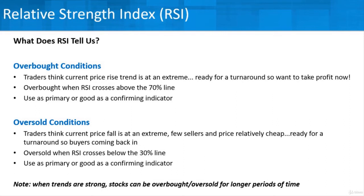Oversold conditions are the exact opposite. Traders think the current price has fallen to an extreme — it's gone way too far, there are few sellers, the price is relatively cheap, and people aren't willing to sell anymore. It might be ready for a turnaround going back up, with buyers starting to come back in, and as it starts to go back up, even more buyers will come in and drive the price up. A security would be oversold when the RSI crosses below the 30% line. So above 70% is overbought, below 30% is oversold — and again, you can use that as a primary or as a confirming indicator.